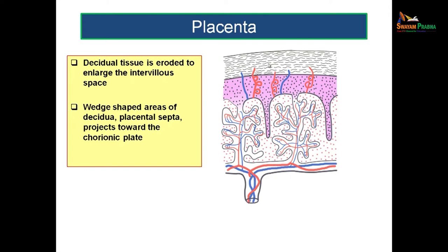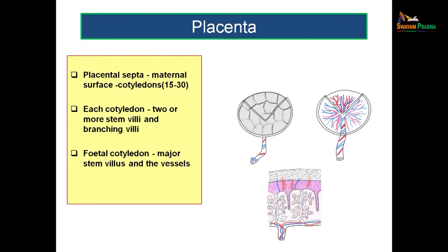The intervillus space moves in this direction, eroding the mother's endometrium, and some of the decidua that remains is known as the placental septa, lying closer to the chorionic plate. The region between two placental septa is called a cotyledon. These cotyledons can be seen when looking from the maternal surface after the placenta is detached from the uterine cavity.